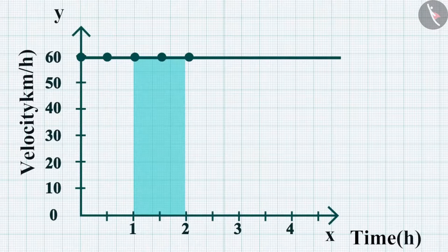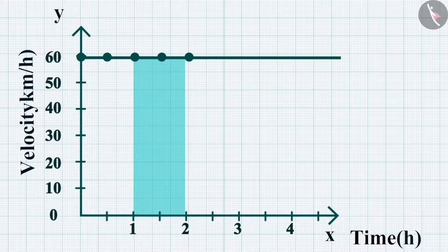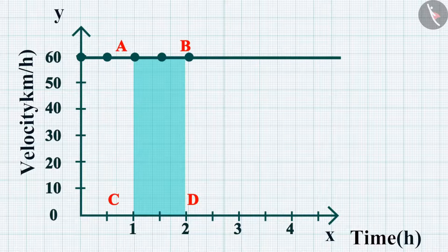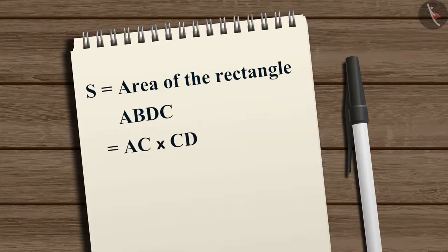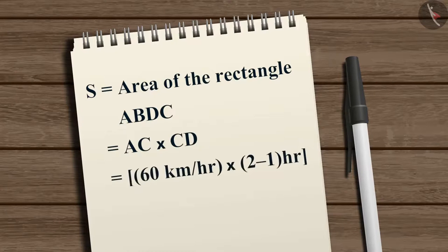To calculate the distance covered by the car between time 1 hour and 2 hours, draw perpendiculars from the time points on the graph. The velocity of 60 km/h is represented by the height AC or BD, and the time interval is represented by the length AB or CD. So, the distance moved by the car in this time interval can be calculated as S equals the area of rectangle ABDC, which equals AC multiplied by CD, which equals 60 km/h multiplied by (2 minus 1) hour, which equals 60 km.